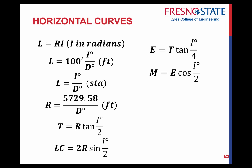Now, as we deal with horizontal curves, we need to be able to calculate certain things: the length of the curve, the radius, the tangent distance, the long chord, the external ordinate, and the middle ordinate. I'm not going to derive the formulas, but I'll provide them so you have this information to continue on. A key thing here is being able to calculate what the length is.